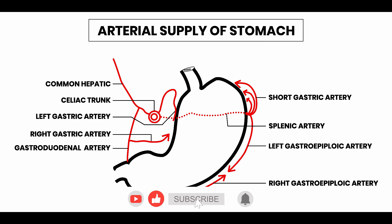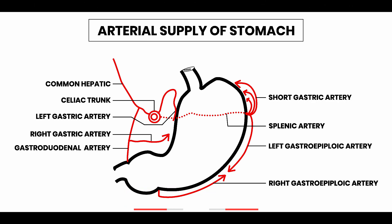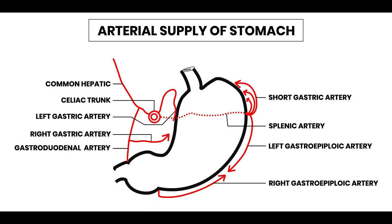These are the labellings, and this is known as the citation. You must write here 'arterial supply of stomach.' If this is present, one should get 50% marks. Thank you everyone.